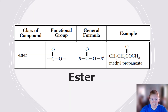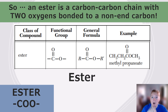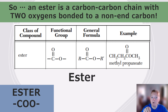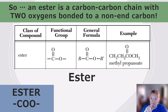An ester has a COO functional group, where one of those oxygens is double bonded. An ester is a carbon chain with two oxygens bonded to a non-end carbon, one double bonded. Because oxygen breaks up the chain, we use two prefixes — for example, 'meth' and 'prop' — naming how many carbons are on each side. The prefix for the side with the oxygen is named second.